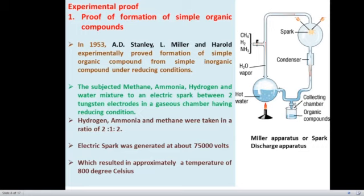Now the question is: what are the experimental proofs related to the theory of origin of life? There are two types of experimental proofs. The first is the proof of formation of simple organic compounds, and the second is the proof of formation of complex organic compounds. In 1953, Stanley Miller and Harold Urey experimentally proved the formation of simple organic compounds from simple inorganic compounds under reducing conditions.